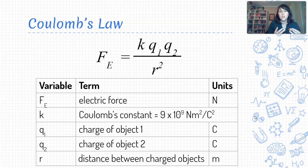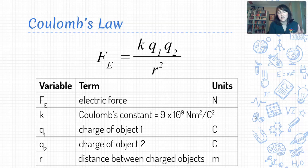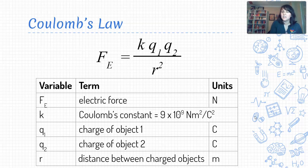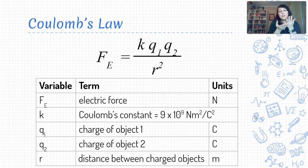Just as we saw before with big G, Coulomb's constant is constant — it doesn't change. You're always going to use that same number of 9 times 10 to the 9th anytime you engage in this calculation. Our other swap is that now we have Q, which represents charge. So to calculate the electric force acting between two charged objects, we multiply Coulomb's constant times the charge of the first object times the charge of the second object, divided by the distance between them squared.